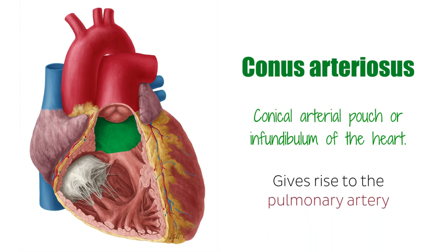The tendon of the conus arteriosus is a fibrous band that extends superiorly from the right ventricle atrioventricular fibrous ring and stretches between the posterior surface of the conus arteriosus and the aorta.